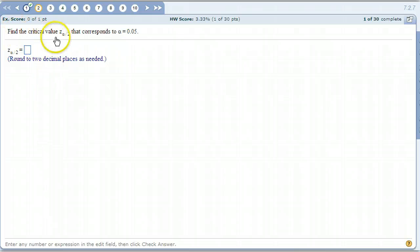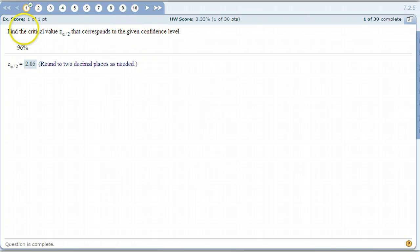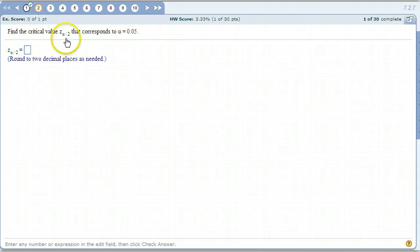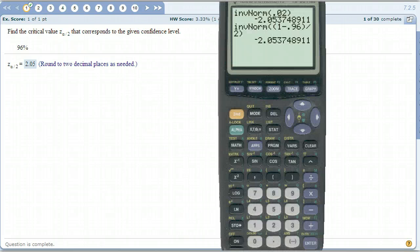This one says, find the critical value Z alpha over 2 that corresponds to alpha equals 0.05. Big difference between 1 and 2. 1's giving you the percent in the middle. 2 is giving you alpha. Remember what we just said. In number 1, how do we get alpha from this number? We subtract 1 minus that number. 1 minus 0.96 was 0.04. That gave us alpha. And then alpha divided by 2 was 0.02.